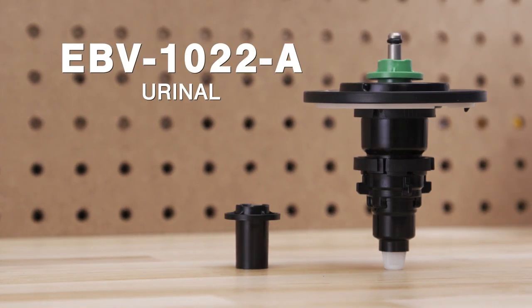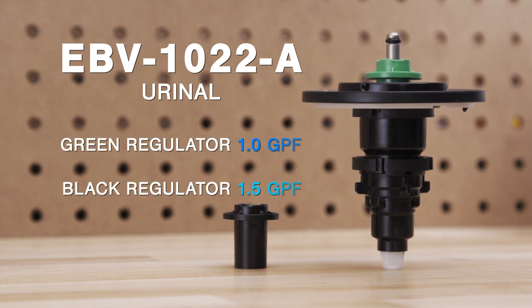Additionally, each assembly uses different flow rings to restrict the water flow. When regulators are paired with a specific assembly, a variety of different flush volumes can be achieved, so be sure to select the right diaphragm kit.